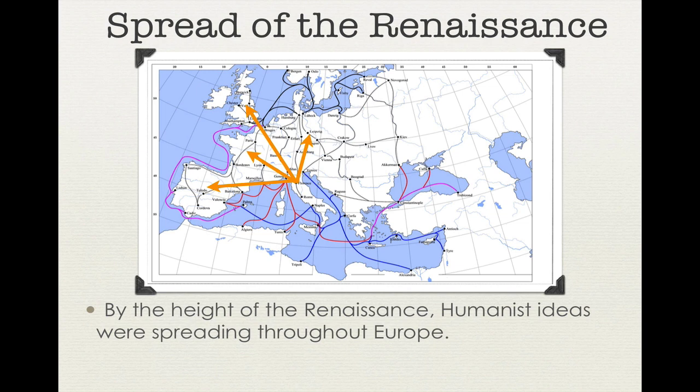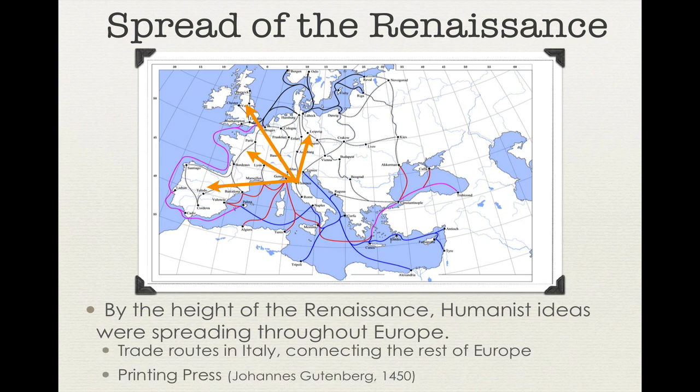Beginning in the late 1400s, the major ideas and influences of the Renaissance spread beyond Italy's borders and to other parts of Europe. This spread of the Renaissance can be directly attributed to the strong trading industry that was earlier established in Italy. By looking at the map, you can see how Europe became interconnected during this time period via land and sea trade networks, which allowed for humanist ideas to spread rapidly throughout the continent.